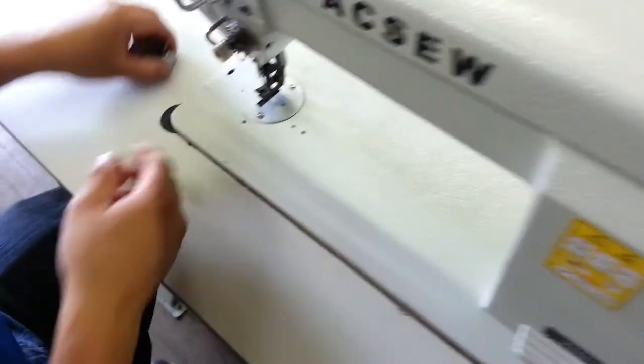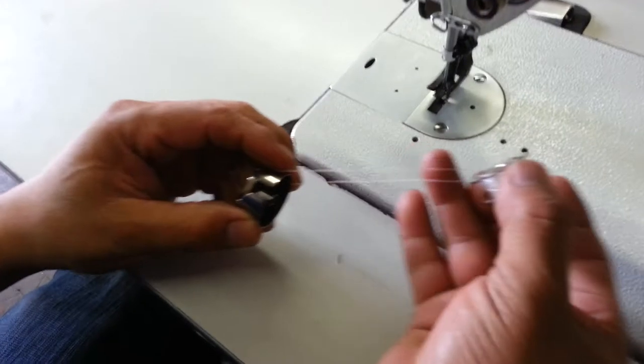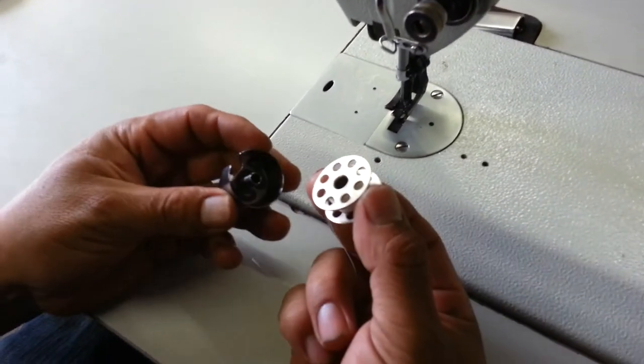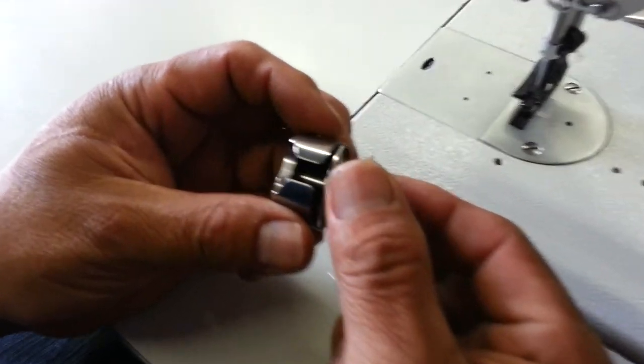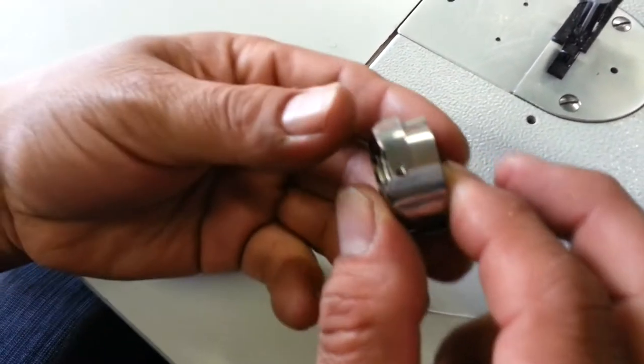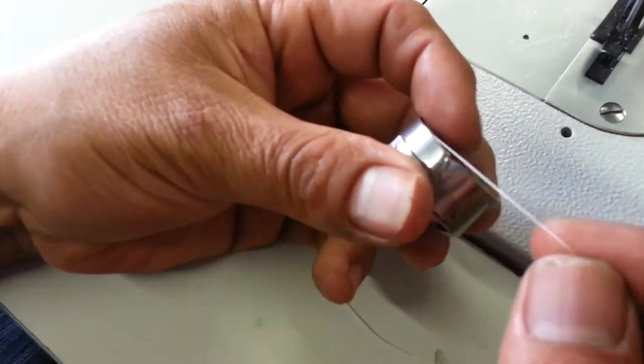So now the next thing we're going to do is thread the bobbin case first. Show the bobbin case. So it doesn't matter which way the thread goes in the bobbin case, counterclockwise or clockwise. Put the bobbin in, go slow.